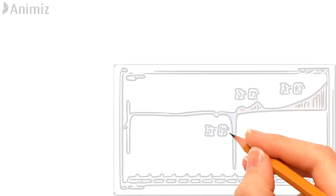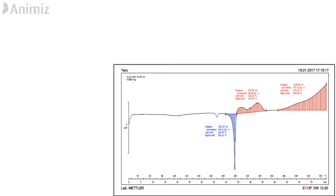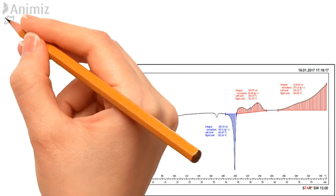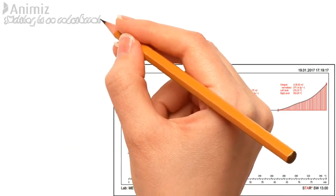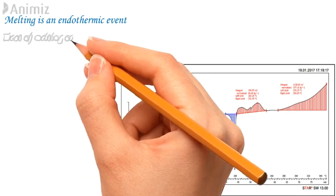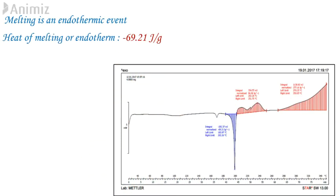When any sample is tested in DSC, then initially it melts down, the blue region in the graph, in case of solid material if melting point is within the given temperature. Melting is an endothermic event, that is why in the graph it has undergone negative deviation from the baseline.